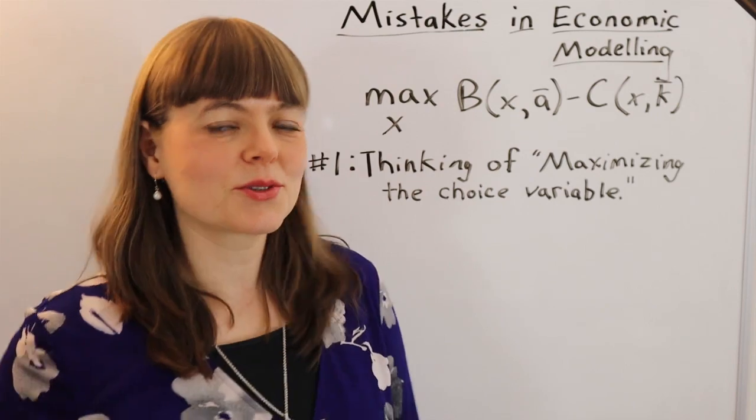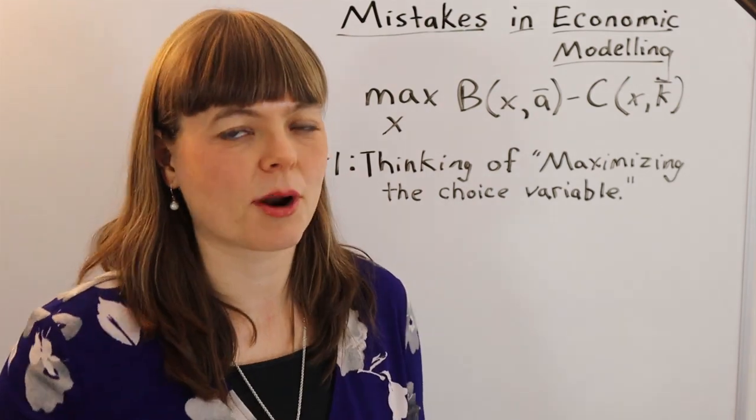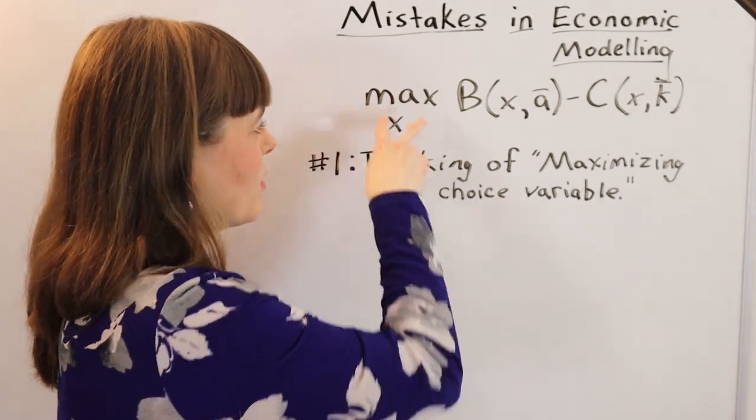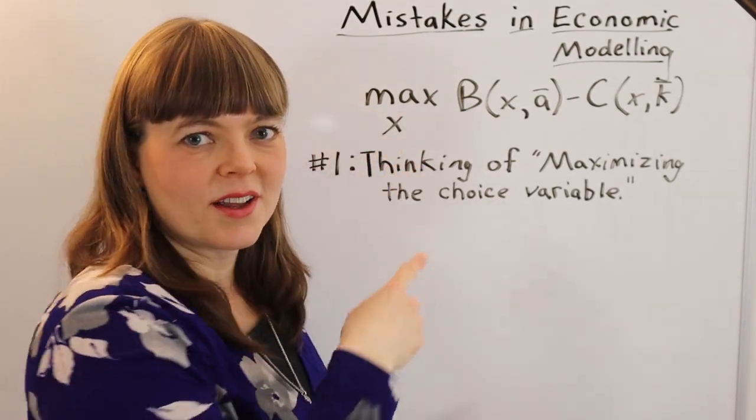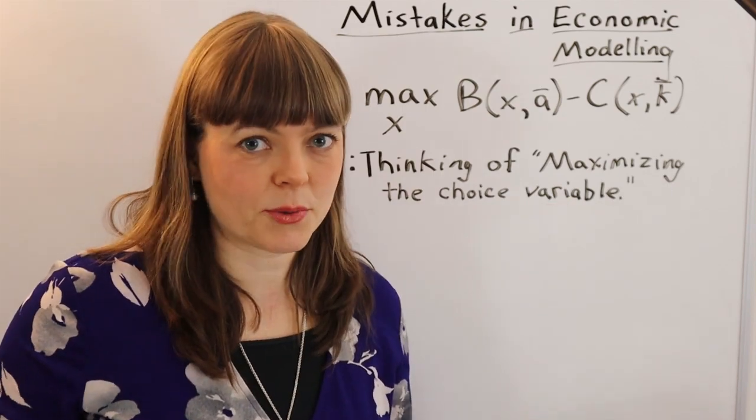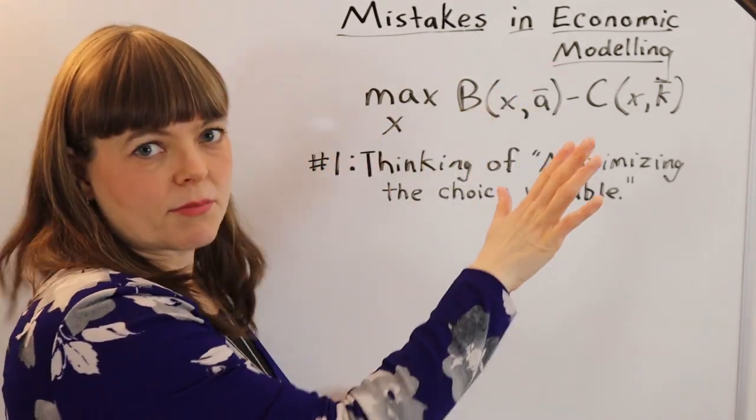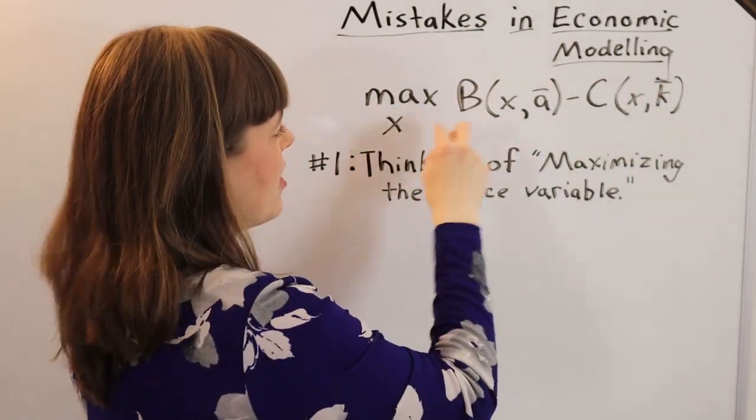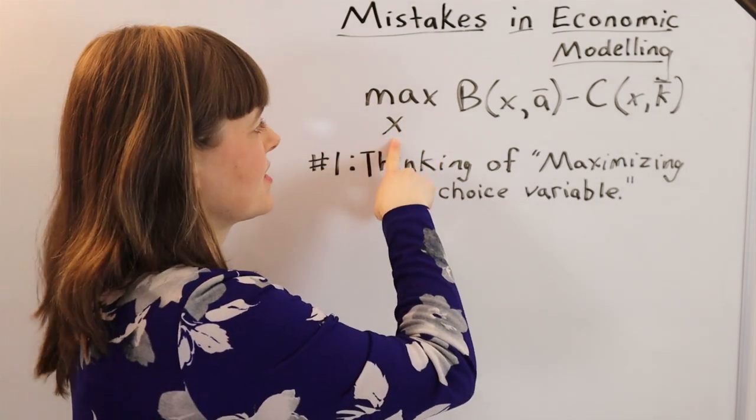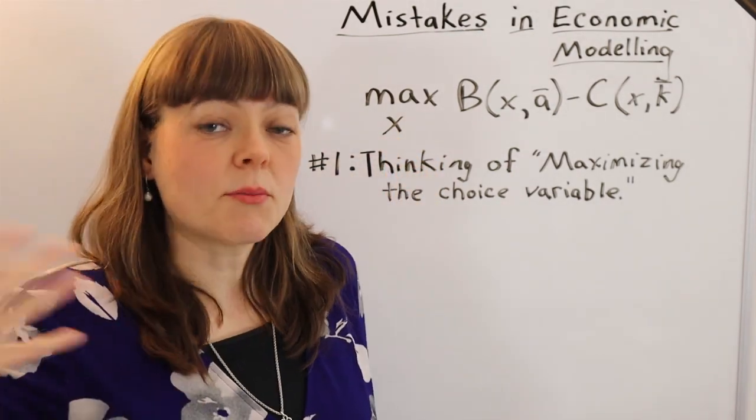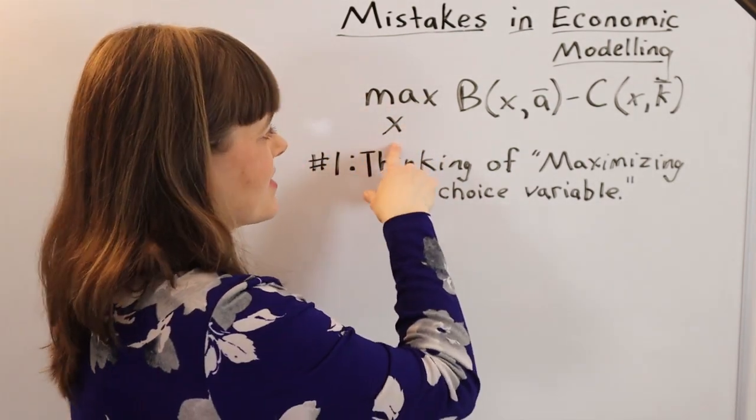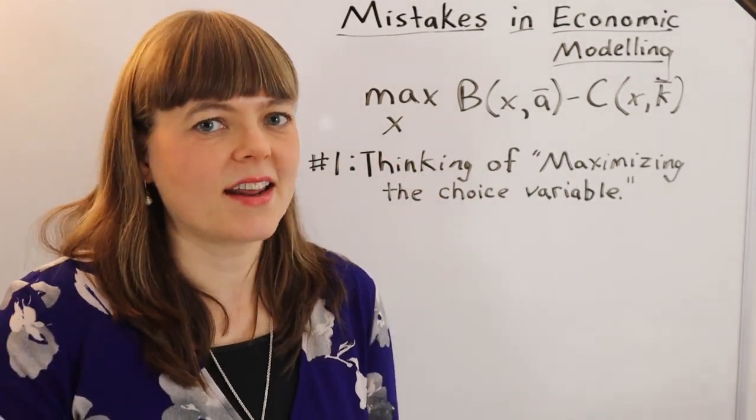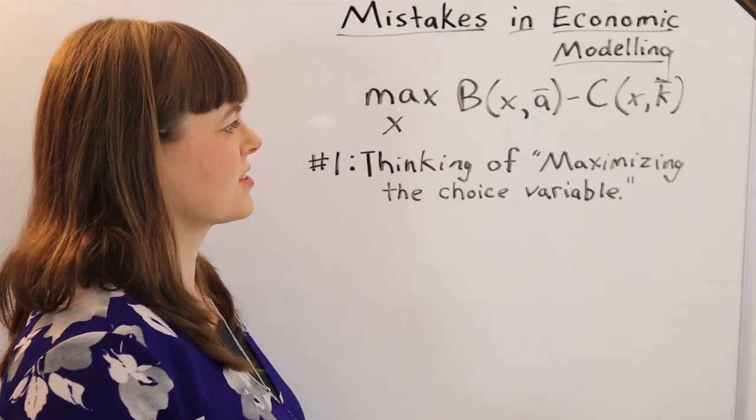And this will absolutely get you in a ton of trouble if you want to logically understand models. Because if you want to maximize the choice variable, that's really simple. You just set it as high as possible. When I build models of time spent studying, you maximize grades minus opportunity cost by choosing the time you spend studying. Well, if someone reads that as maximizing time spent studying, then you just choose to study 24 seven. And it doesn't really make any sense. That's just not how models are set up.